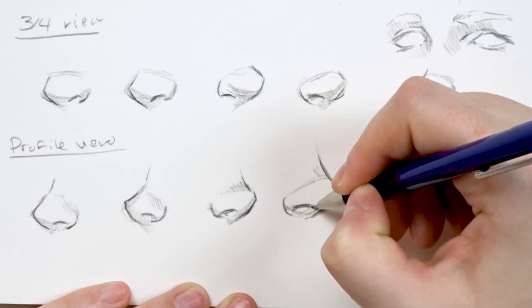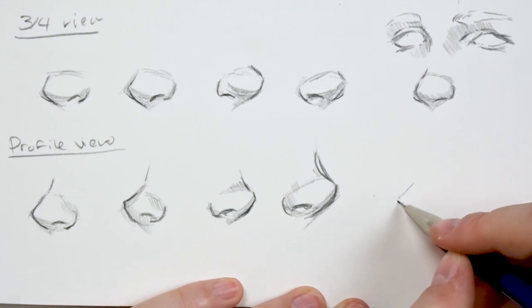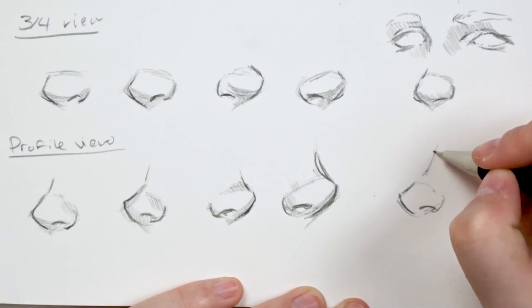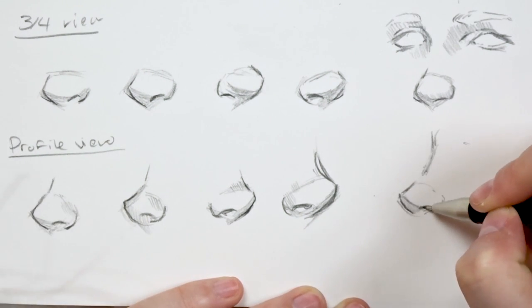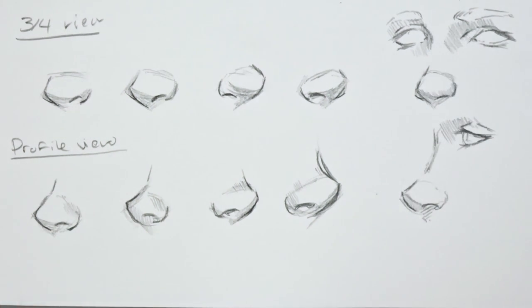So I think the trick here is to really play up the sort of angle from where the nose tip is to where it runs underneath the sort of nostril. But again, it's just a matter of practice to get the sort of angle right. And the more you draw these little noses, the better you will become.